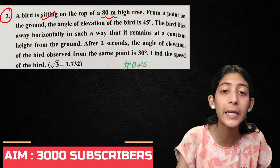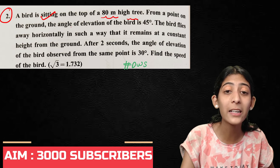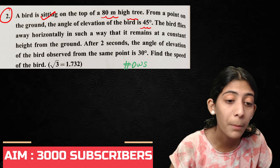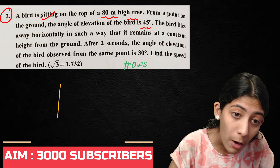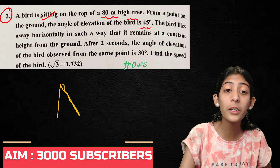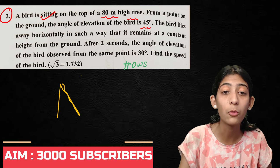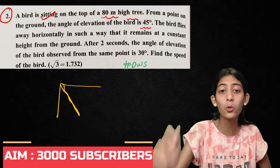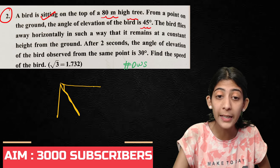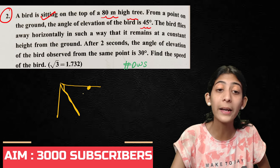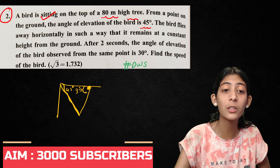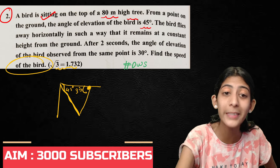Second question: A bird is sitting on top of an 80 meter high tree. From a point on the ground the angle of elevation of the bird is 45 degrees. A person standing on the ground is 1 meter tall. The bird flies away horizontally at a constant height. After 2 seconds, the angle of elevation of the bird from the same point is 30 degrees. Find the speed of the bird.